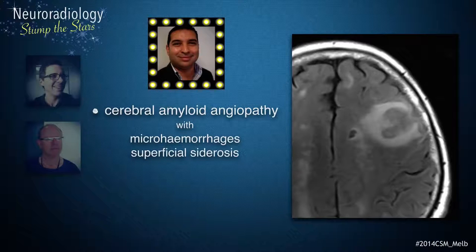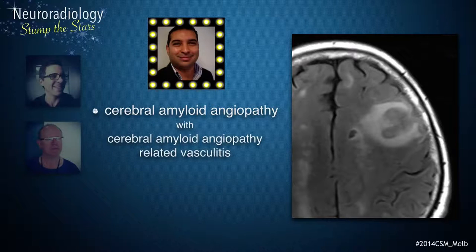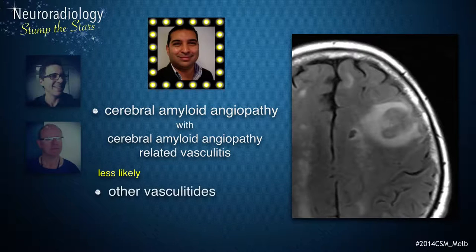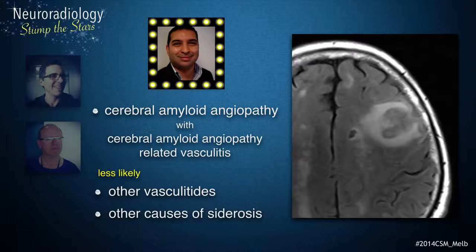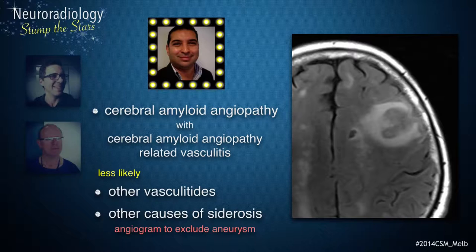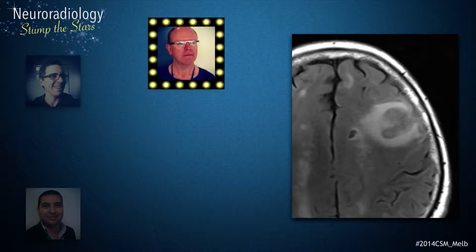There are slightly greater cortical changes than would normally be expected, potentially representing a more inflammatory process such as cerebral amyloid angiopathy related vasculitis rather than typical CAA changes. Other less likely differential diagnoses include changes secondary to vasculitis including granulomatous vasculitis. Beyond this, one would consider other possibilities leading to superficial siderosis, and I would suggest vascular imaging to ensure there are no vascular abnormalities such as an aneurysm contributing to the siderosis.